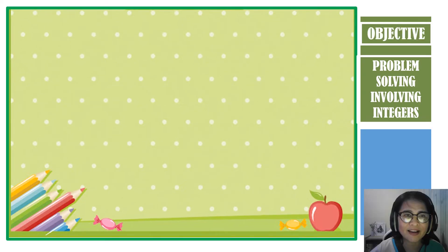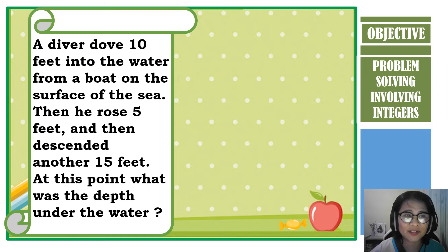Let us have an example. A diver dove 10 feet into the water from a boat on the surface of the sea. Then he rose 5 feet, and then descended another 15 feet. At this point, what was the depth under the water?